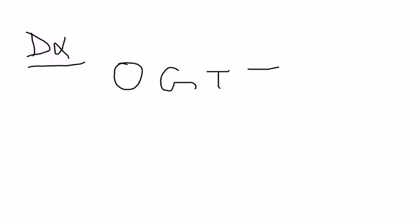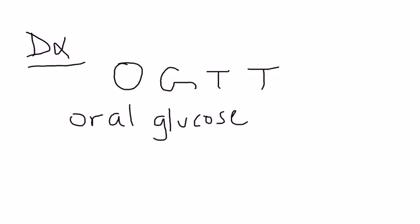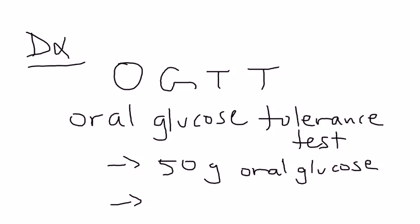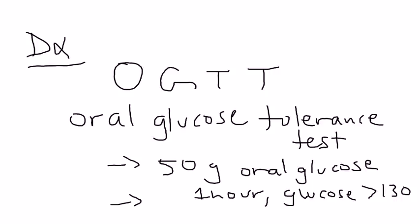When a woman has her pregnancy testing over the course of 38 to 40 weeks, one of those tests is called an oral glucose tolerance test. This is done to screen for diabetes in pregnancy, and it's done in two steps. The first step is giving the patient 50 grams of oral glucose, waiting one hour, and then testing the blood sugar. If the blood glucose level is greater than 130, you proceed to the next step.